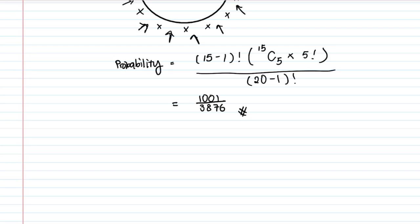We take the fathers out because they may end up sitting next to each other if included from the start. That's why we remove them and insert them strategically. The total number of ways all 20 sit in a circle — the denominator — is simply 19 factorial.